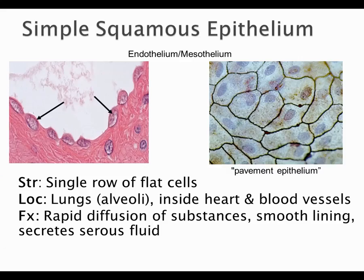Simple squamous is a single row of flat cells. Looking at both a transverse and top-down view, the side view shows the classic squished shape, and the top view looks like pavement or sunny-side-up eggs. Simple squamous allows for really rapid diffusion — particularly oxygen. You see this tissue in areas where you want rapid diffusion of O2: the heart, blood vessels, lungs, and particularly the alveoli, which are the sites of oxygen passage in the lungs.